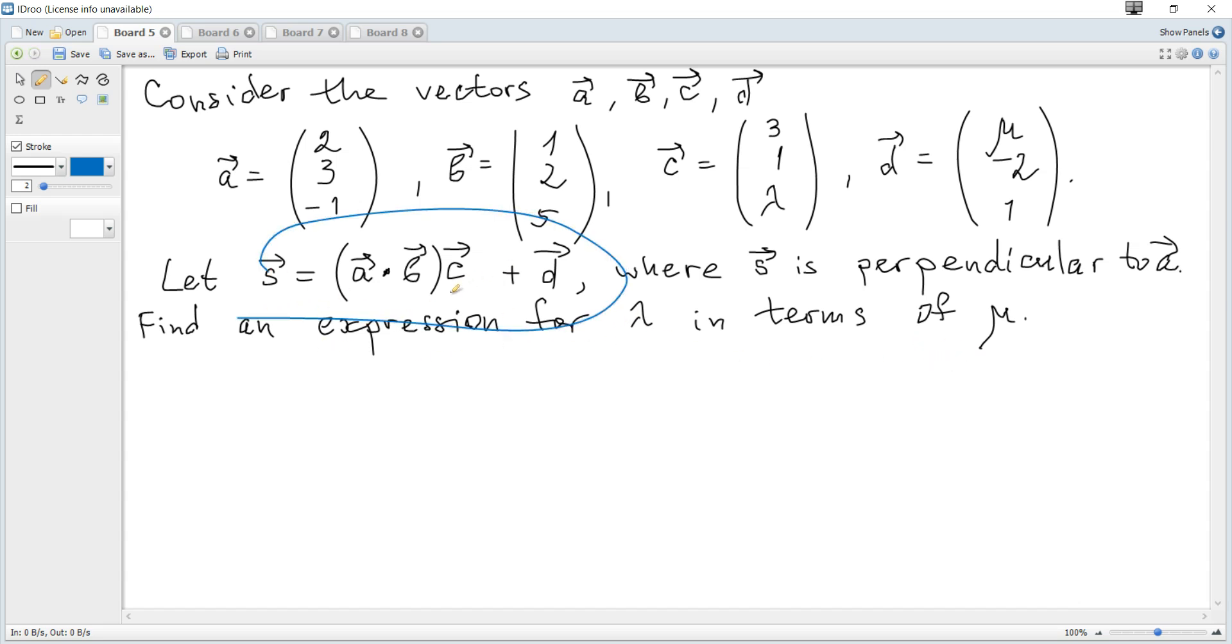So let's find this s vector, its coordinates firstly. What is a dot product b? To find that product or scalar product, the formula is given in the data booklet. Just x times x, so 2 times 1, plus y times y, 3 times 2, plus z times z. You can see it's 2 times 6, 8, minus 5, it's 3.